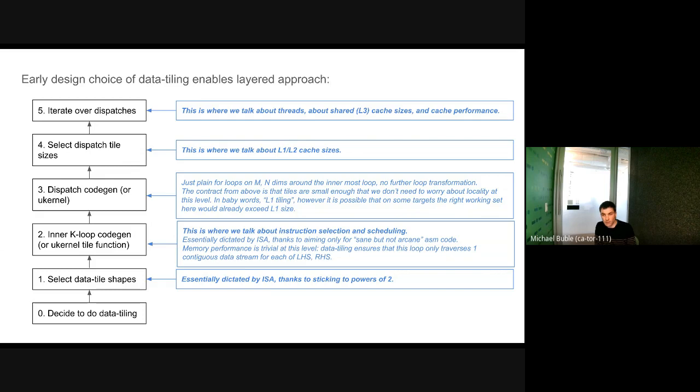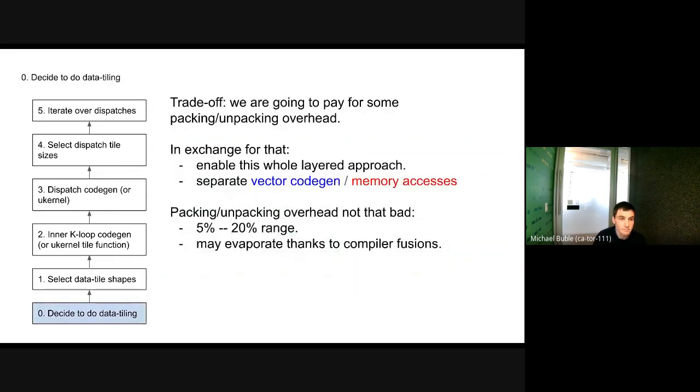Choosing early to do data tiling unlocks a layered approach where I can start from the inner layers and walk my way out to the outer layers. At each layer, I only have a few variables to solve for, and when I move to the next layer, I never have to solve again for those already solved variables. I only incrementally solve for a few isolated variables at each layer.